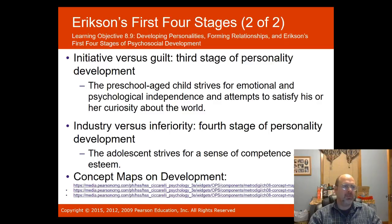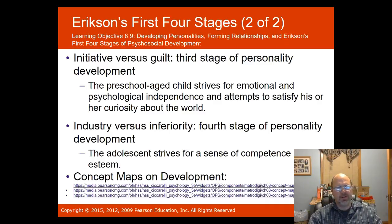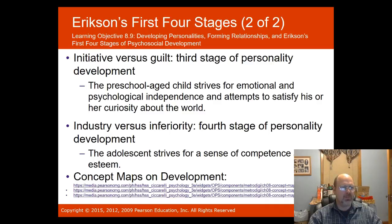The third stage is initiative versus guilt, where the preschool child strives for emotional and psychological independence and attempts to satisfy curiosity about the world. The fourth stage is industry versus inferiority, where the adolescent strives for a sense of self-competence and self-esteem.